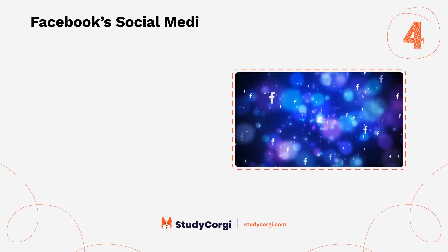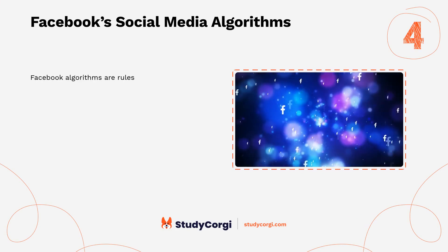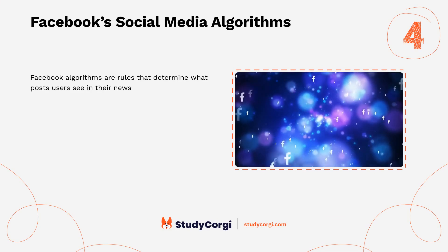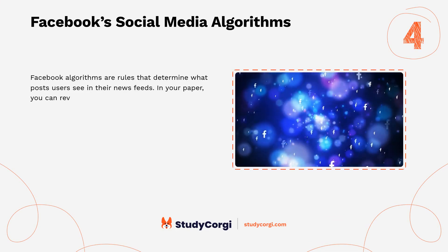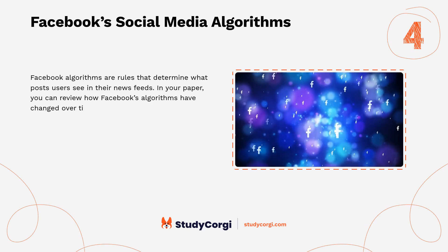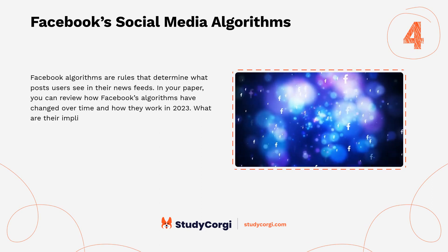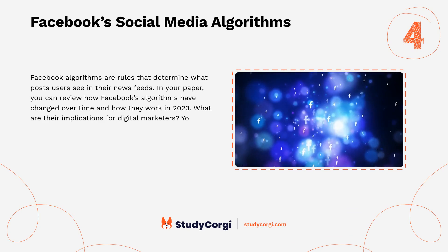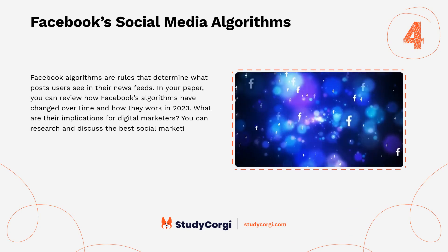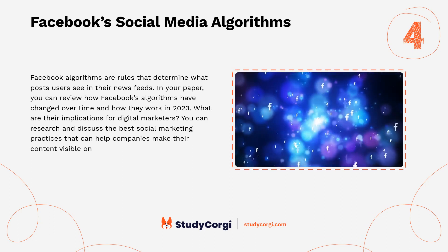Facebook's social media algorithms. Facebook algorithms are rules that determine what posts users see in their news feeds. In your paper you can review how Facebook's algorithms have changed over time and how they work in 2023. What are their implications for digital marketers? You can research and discuss the best social marketing practices that can help companies make their content visible on Facebook.